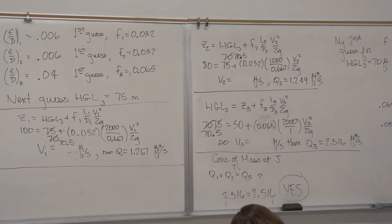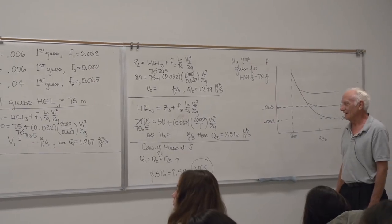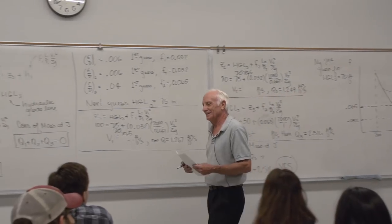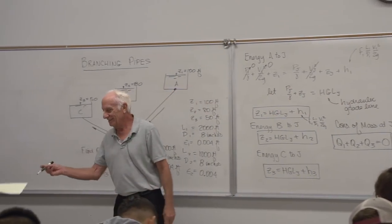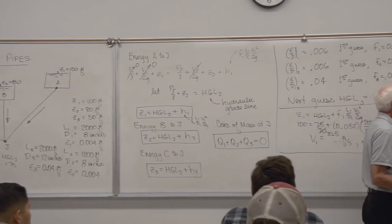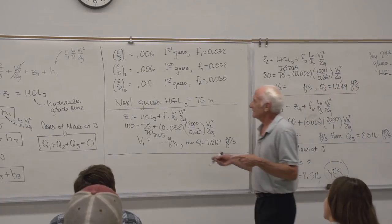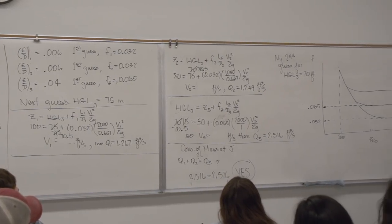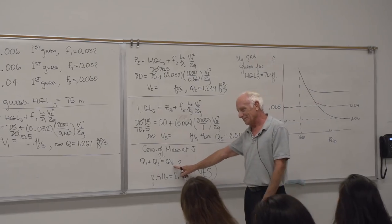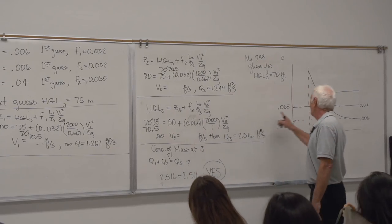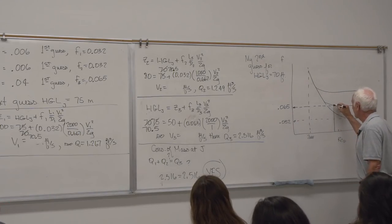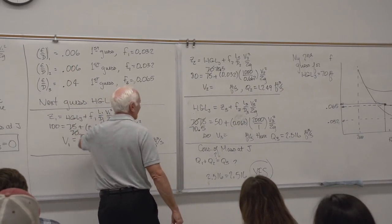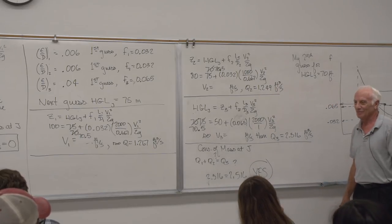Now I know the three flow rates and HGL_J equals 70.5 feet. But I'm not done — those friction factors were guessed from the flat part of the Moody chart. With the converged velocities I get new Reynolds numbers, go back to the Moody chart for updated F values, and repeat the whole iteration. These are genuinely difficult problems.